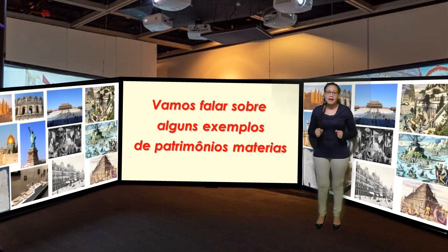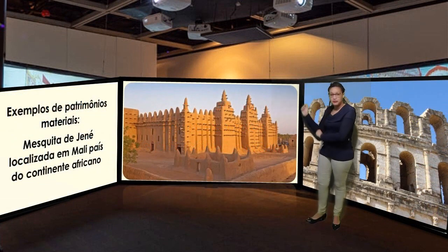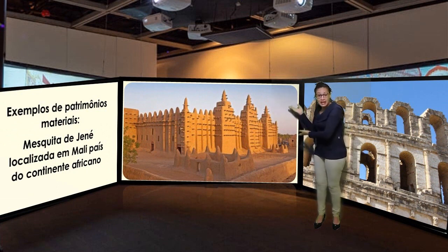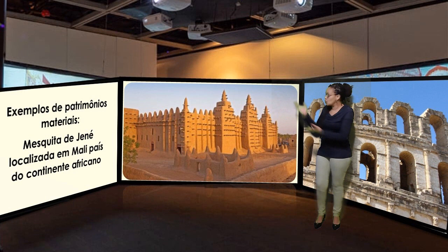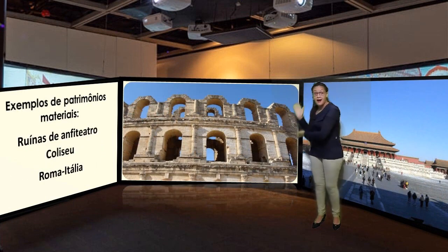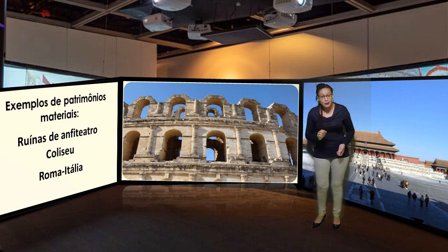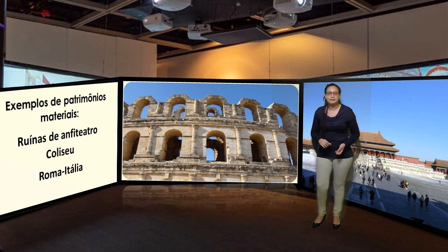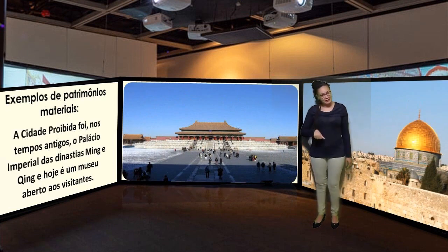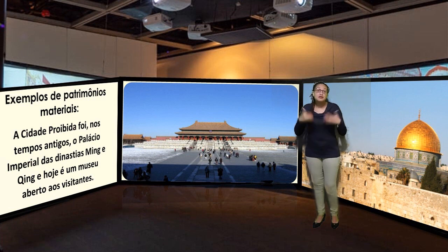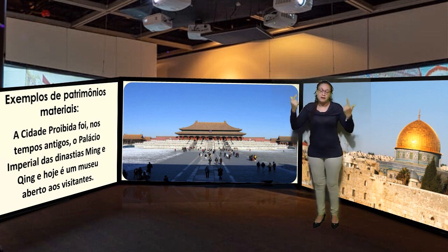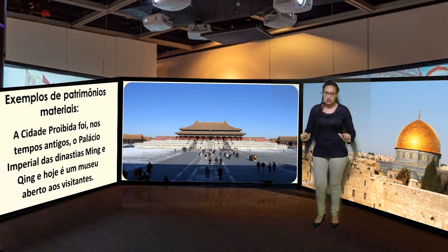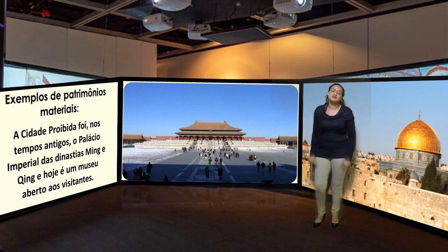Agora vamos falar sobre alguns exemplos de patrimônios materiais. A Cidade Proibida foi, nos tempos antigos, o palácio imperial das dinastias Ming e Qing, e hoje é um museu aberto aos visitantes.